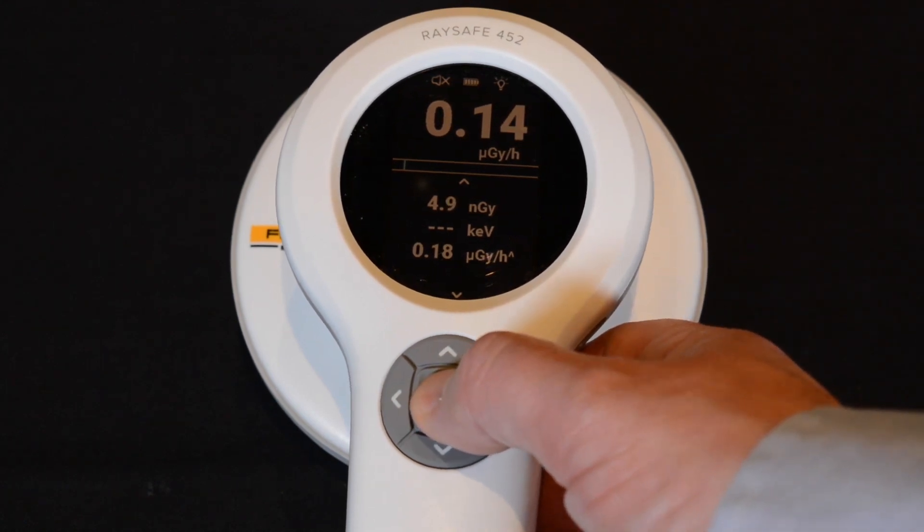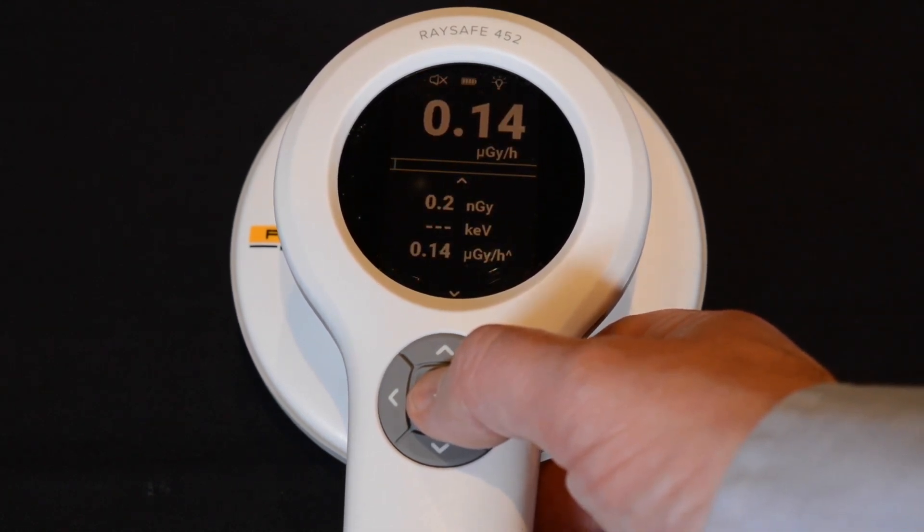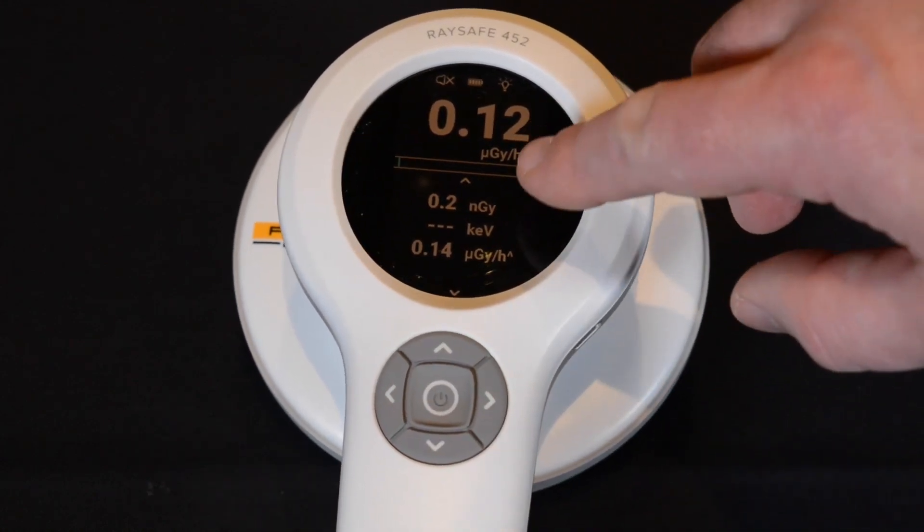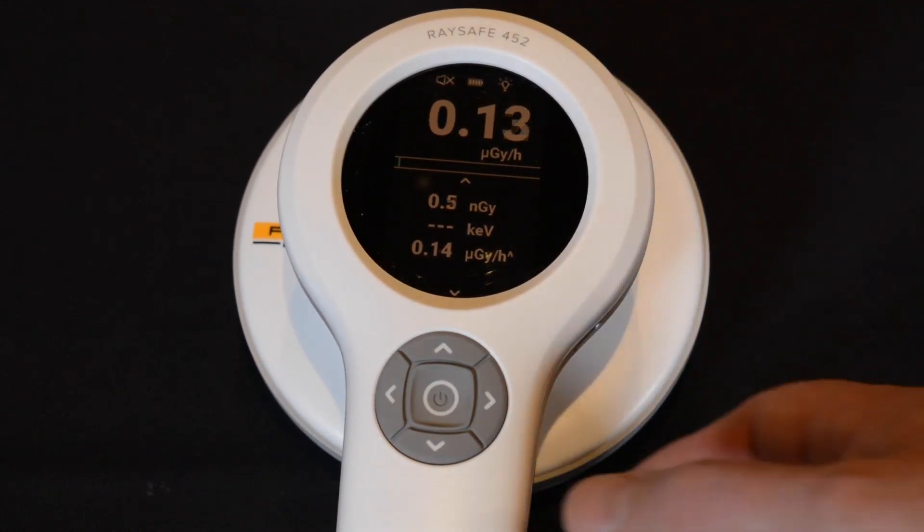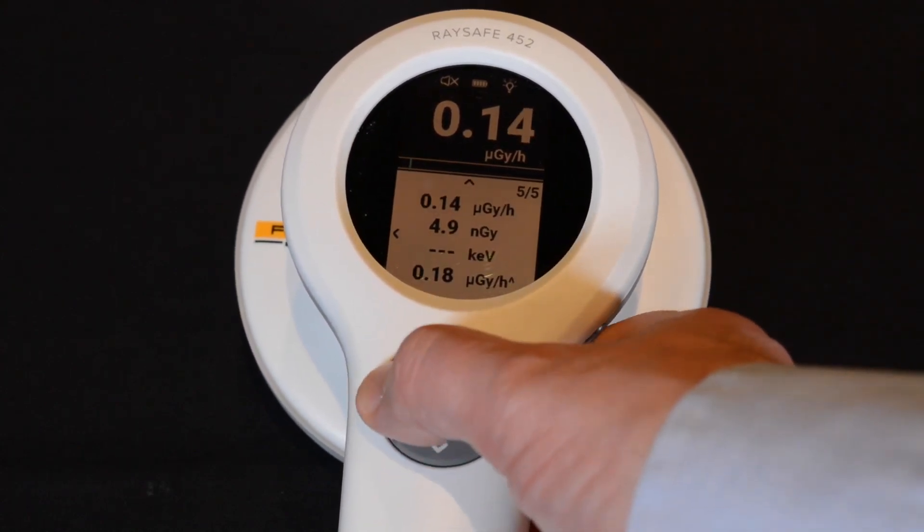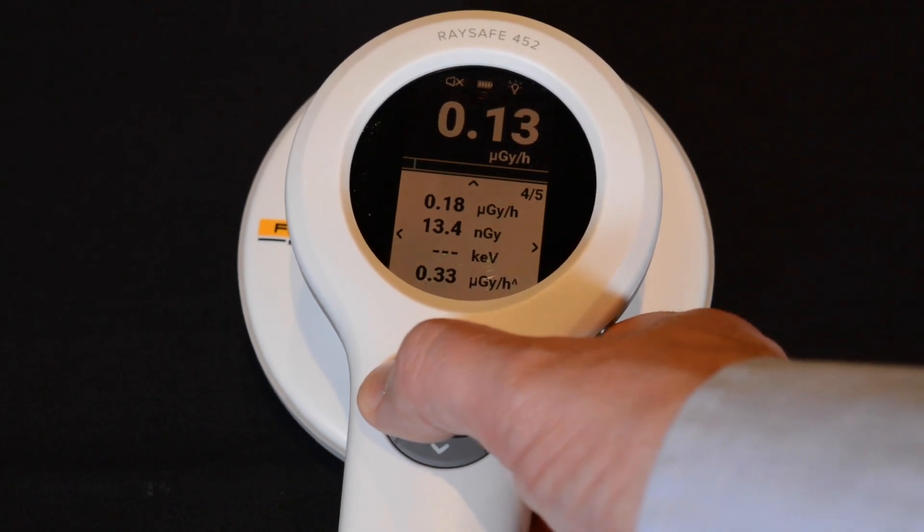You can store a measurement by quickly clicking on the center button. When you save it, it will reset the accumulation and the peak value. But the live value is always happening. You can scroll down to see what you stored, you can scroll through your saved measurements, and you can download it to a PC, export it to Excel, or handle it any way you like.